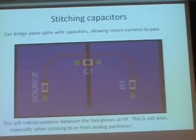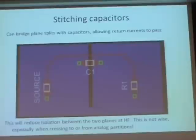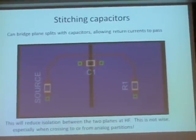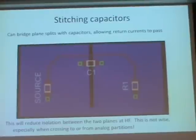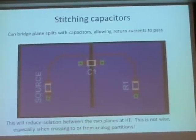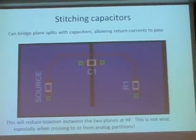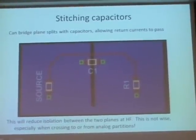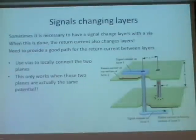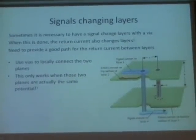The problem is if we have two ground planes that need to remain isolated from each other — for example, one digital supply with broadband noise and one clean analog supply — adding a stitching capacitor destroys that isolation. This solution is usually not acceptable when two planes need to stay isolated at high frequencies. It's a compromise we should avoid making.